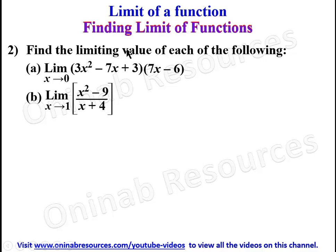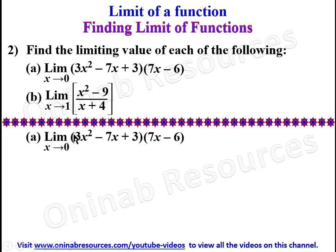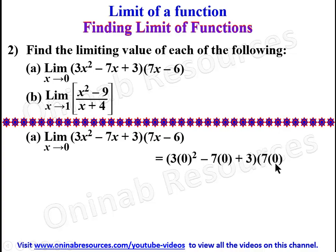Problem 2: find the limiting value of each of the following. Part A is an example of a product of two functions. We substitute x equals 0 directly, giving 3(0)² minus 7(0) plus 3 for the first function, and 7(0) minus 6 for the second. This gives 3 times negative 6, which equals negative 18, the limiting value of the function as x approaches 0.